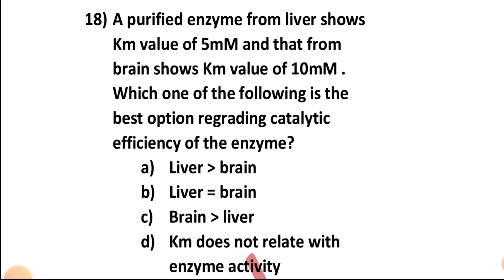The Km value in liver is 5 millimolar and in brain it is 10 millimolar. The higher the Km value, the lower the catalytic efficiency. So the catalytic efficiency is greater in liver and lower in brain. The answer for question 18 is option A — catalytic efficiency is greater in liver.